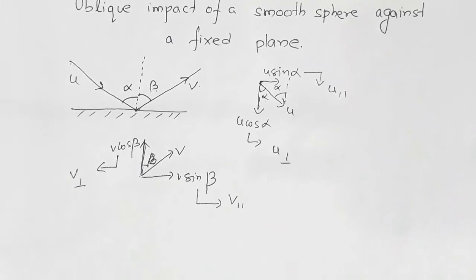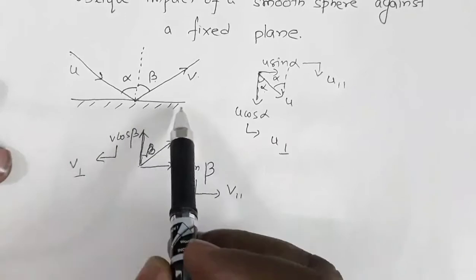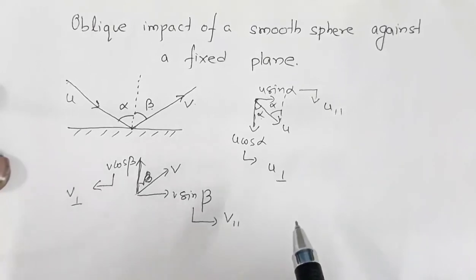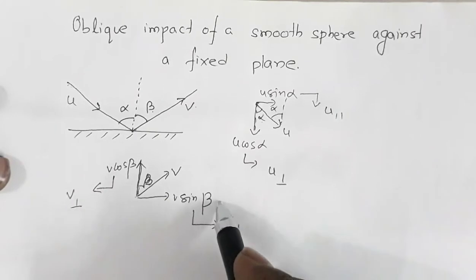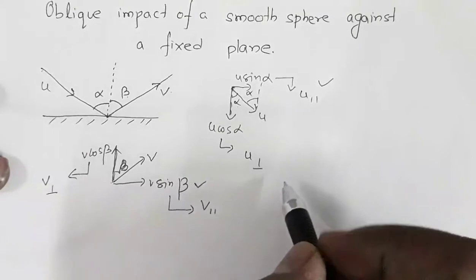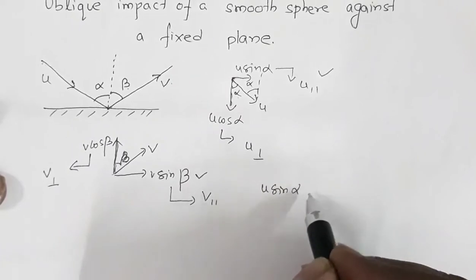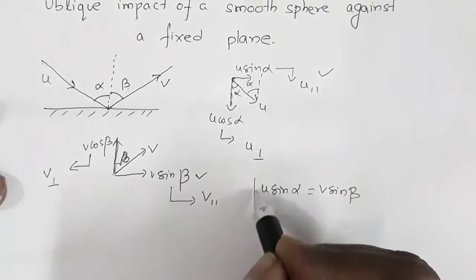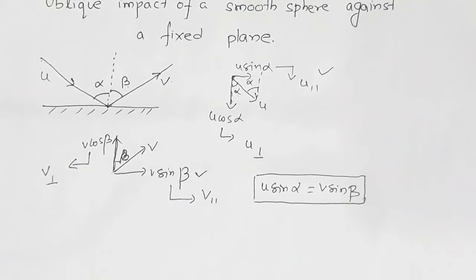The components of velocities which are parallel to the surface remain invariant during collision — there is no change in the parallel components. So we equate the parallel components: u sin alpha is equal to v sin beta, since there is no change in velocity components parallel to the surface of impact.